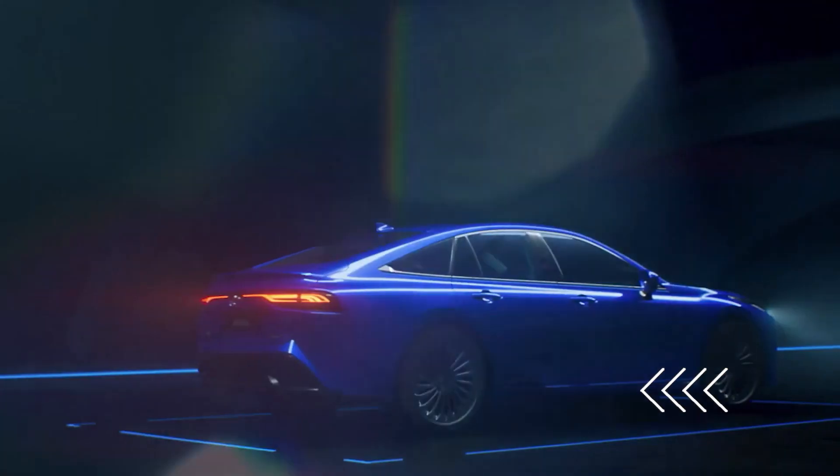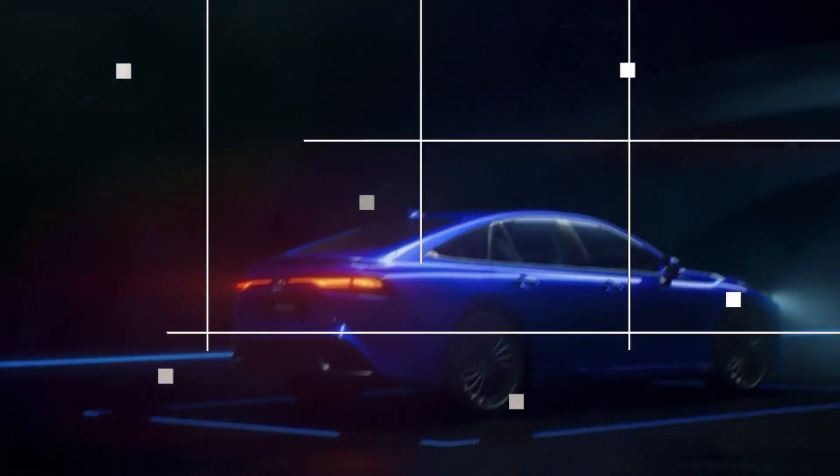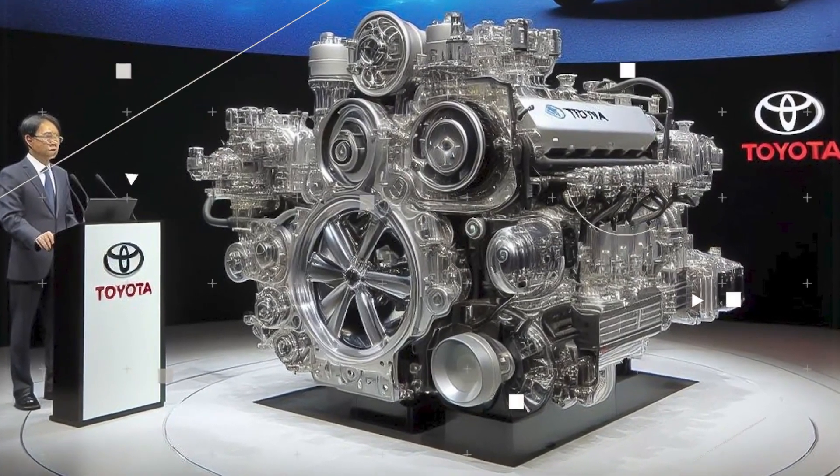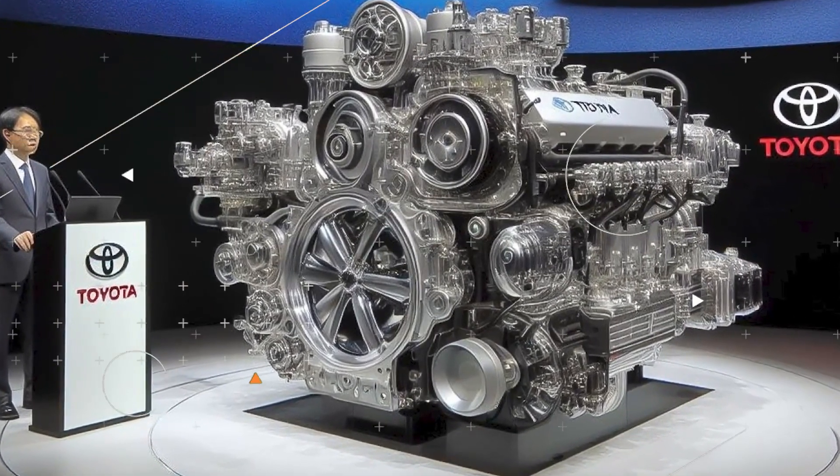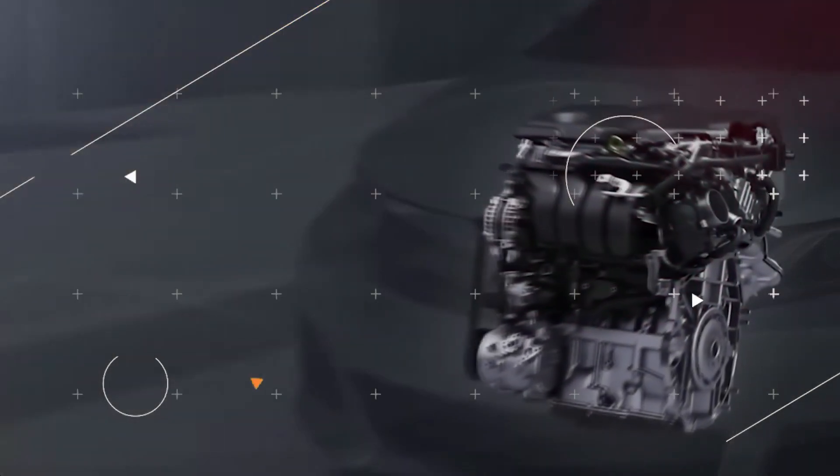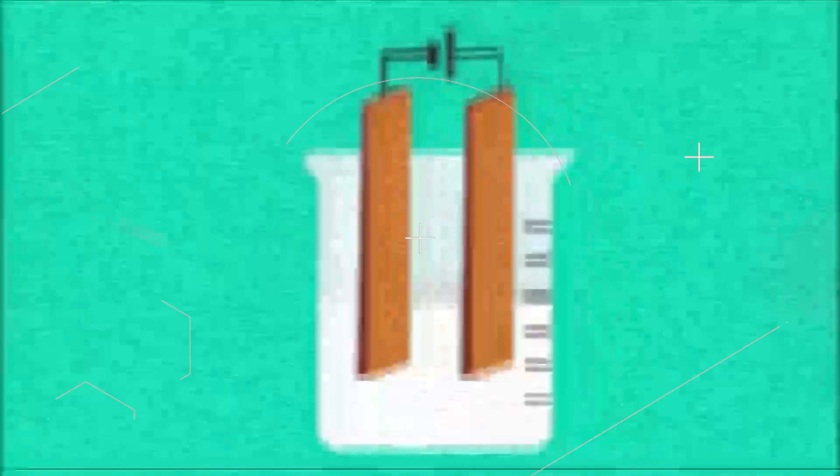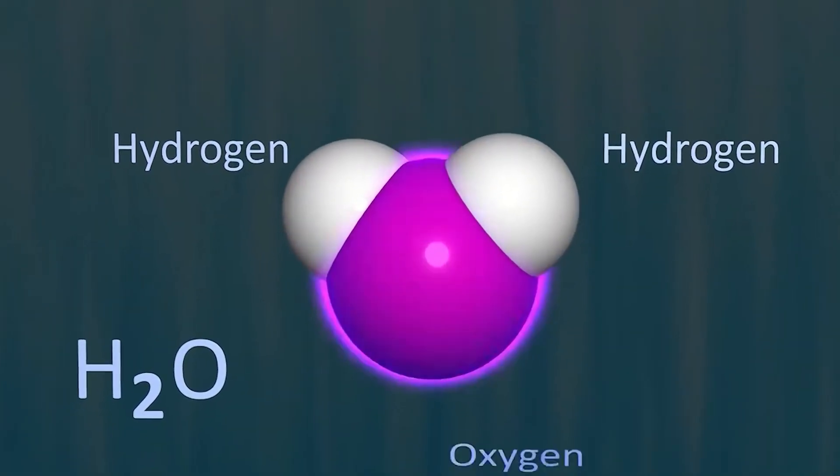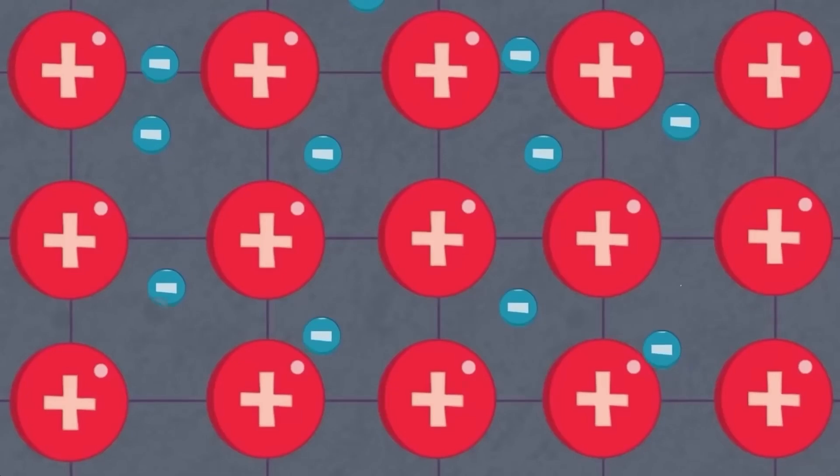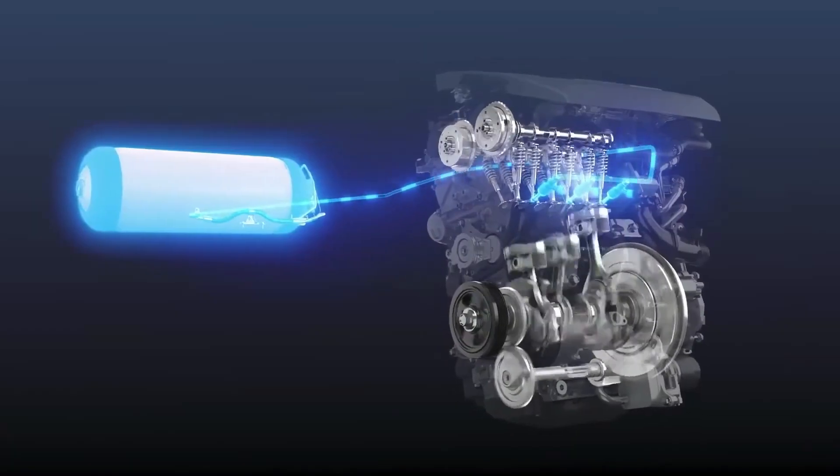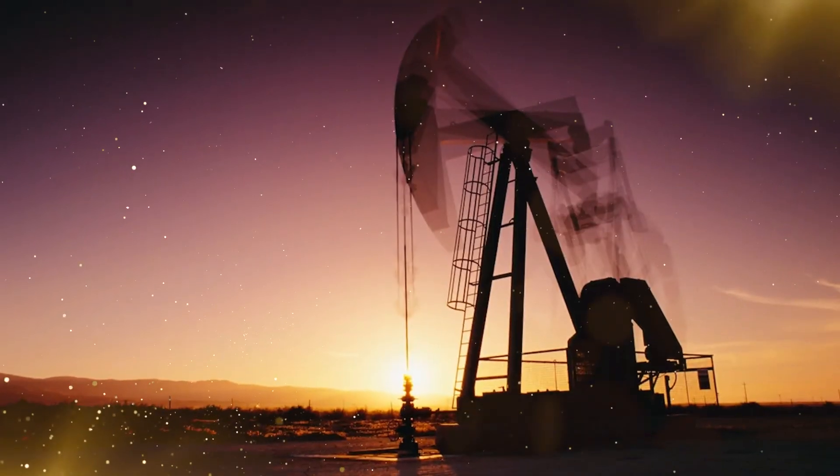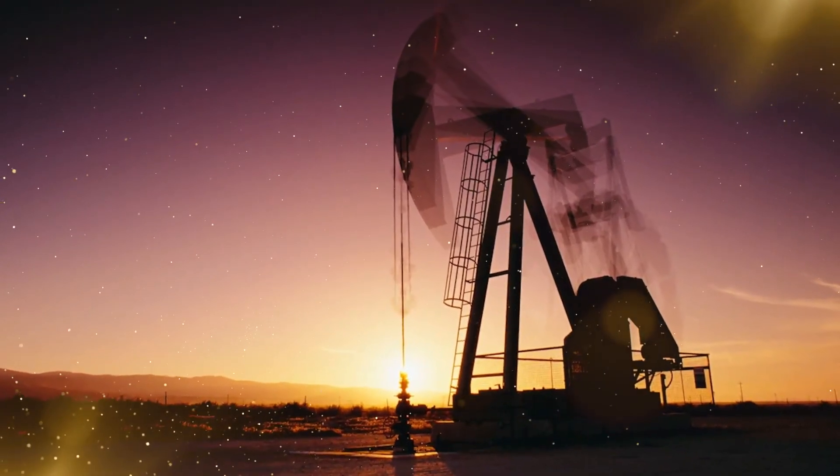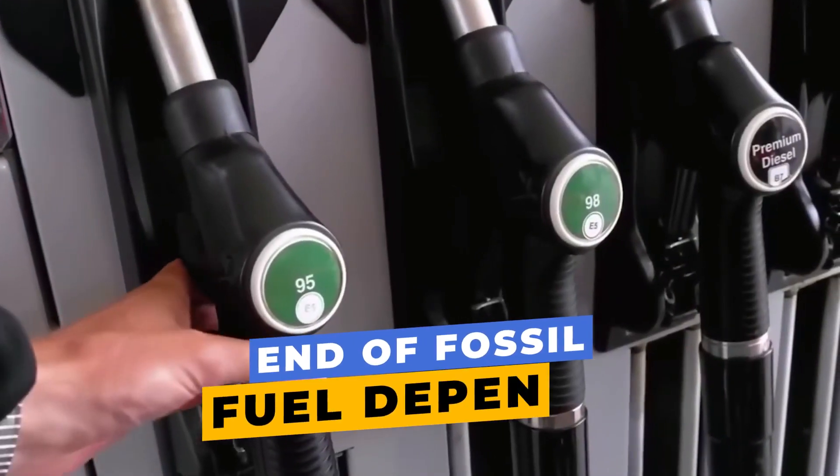Let's start with the basics. A water engine, in concept, uses water to create energy, usually by splitting it into hydrogen and oxygen through a process like electrolysis. Hydrogen, when used in fuel cells, produces electricity with only water as a byproduct. It's clean, renewable, and compared to oil, endless. If this technology becomes widespread, we could see the end of fossil fuel dependency.